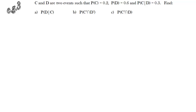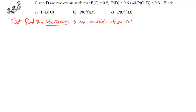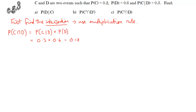Onto our next example. The first thing we want to find is a conditional probability: probability of D given C. For conditional probability, we need to know the intersection, so we use the multiplication rule. The probability of C intersection D equals the probability of C given D, multiplied by the probability of D. Putting the values in gives us 0.18 for the intersection, and that means we can draw a Venn diagram.